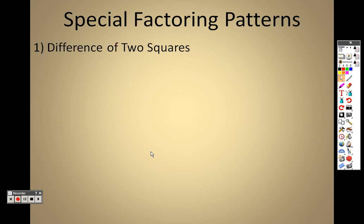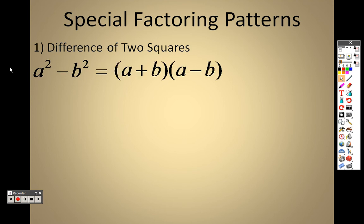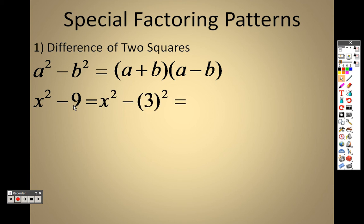Special factoring patterns: difference of two squares. If you have a² minus b², that factors as (a plus b)(a minus b). So if the first term is something squared and the second term is something squared with a minus sign in the middle, you can separate them quickly. For example, x² minus 9: since 9 is 3 squared, the factors are (x plus 3) and (x minus 3).